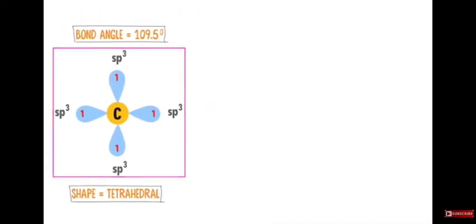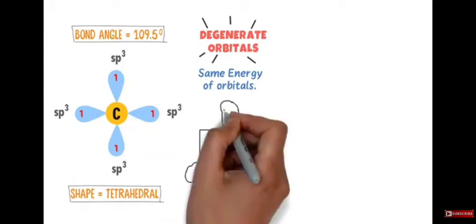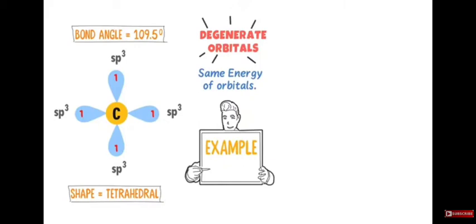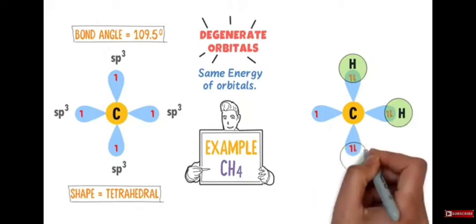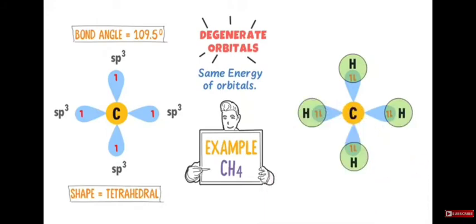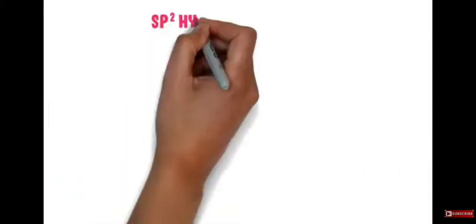These four sp3 hybrid orbitals are called degenerate orbitals, meaning they all have the same energy. As an example of sp3 hybridization, consider methane (CH₄). Carbon has four unpaired electrons in its four sp3 hybrid orbitals. According to valence bond theory, unpaired electrons are needed to form covalent bonds, so each sp3 hybrid orbital shares its single valence electron with one hydrogen atom to form CH₄, giving methane its tetrahedral shape and geometry.